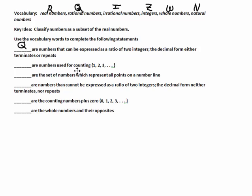What are the numbers used for counting? One, two, three, and so on. That would be the natural numbers, big N right there for natural numbers.